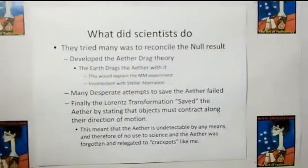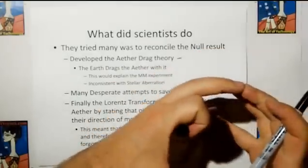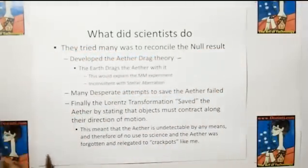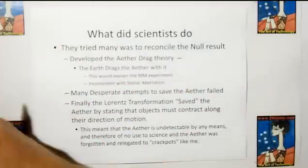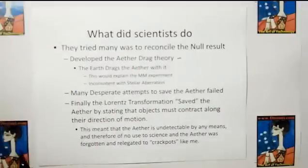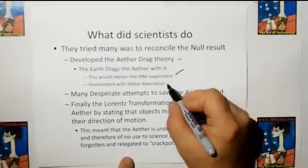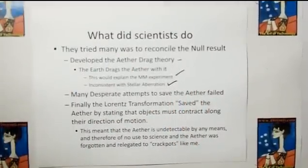Scientists tried to save the aether theory. They came up with the aether drag theory, assuming that as the earth moves through space it drags the aether with it — so no longer does the earth move through the aether; the earth is dragging it. That would explain the Michelson-Morley result, but it becomes inconsistent with stellar aberration, which we'll cover in a whole video by itself.